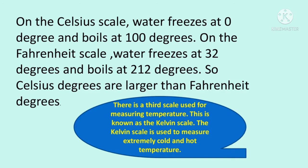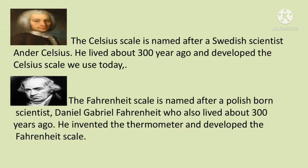In 1848, Lord Kelvin defined an absolute scale based on the Carnot cycle, which was named after him as Kelvin's absolute temperature scale. In the Kelvin scale, the zero point is 273.15 below that of the Celsius scale. So the standard measure of temperature in the International System of Units is the kelvin (K).